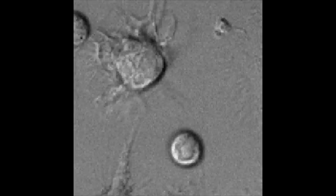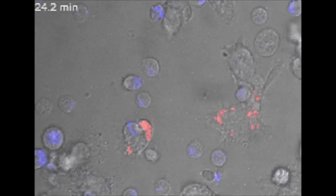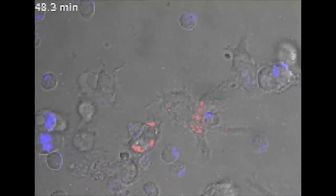T cell activation by dendritic cells takes place in lymph nodes where the two cells encounter and form tight intracellular junctions which are called immune synapses by analogy with neuronal synapses.